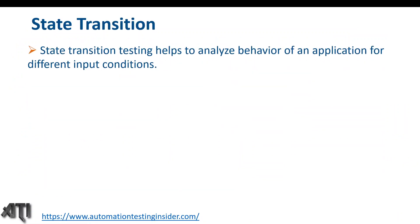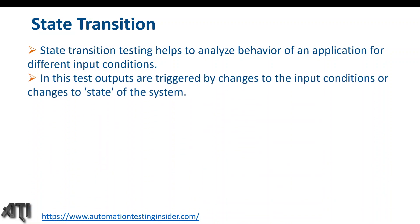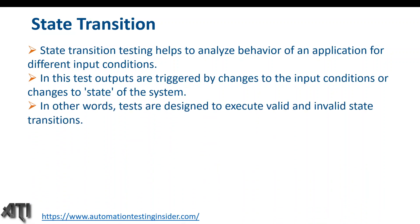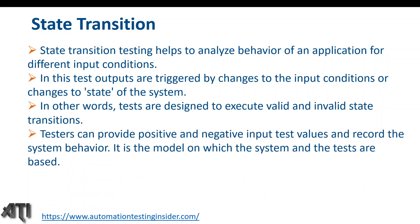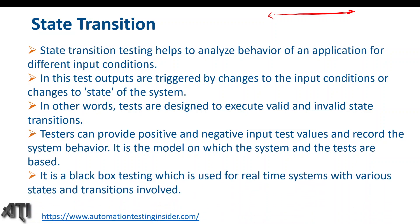Now let's talk about state transition. State transition helps to analyze the behavior of an application for different input conditions. Outputs are triggered by changes to the input condition or changes to the state of the system. Tests are designed to execute valid and invalid state transitions. This technique is very useful when an application has sequence rules — when there is some defined sequence of events.